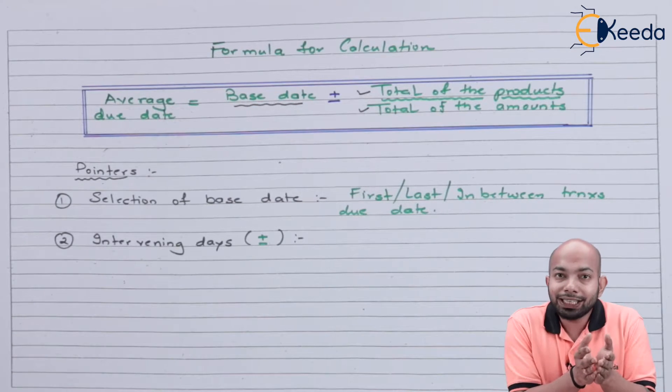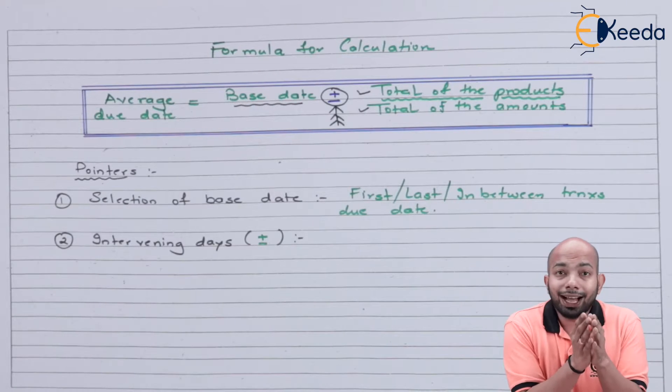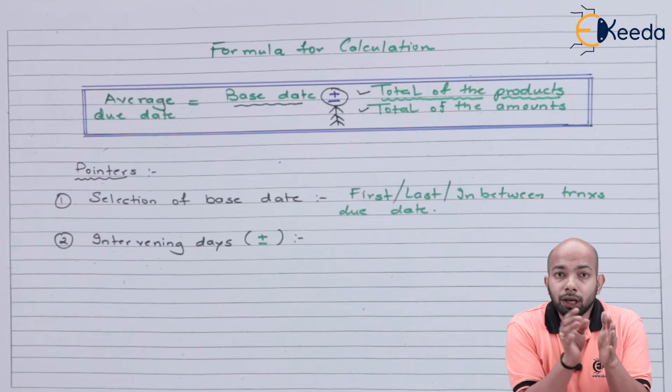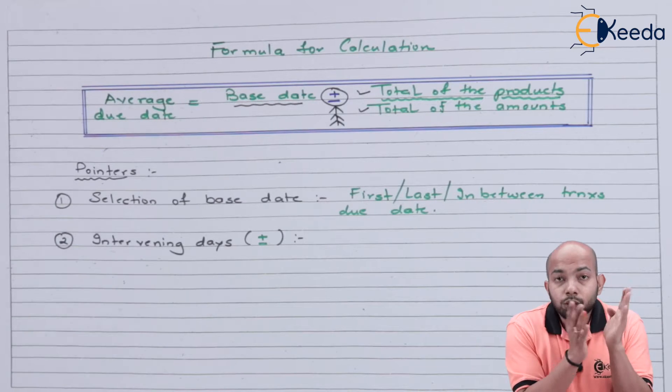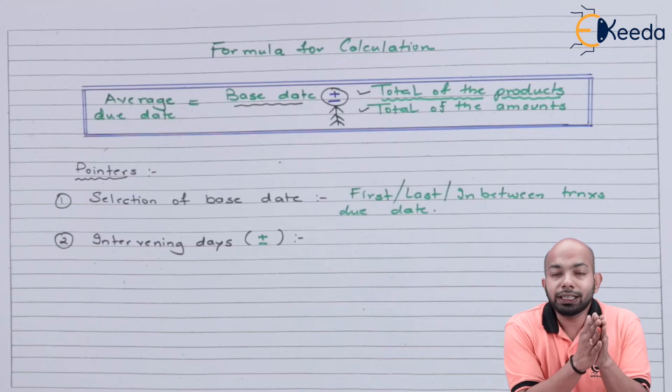The second pointer is intervening days - the plus minus days. Notice the highlight in the formula: plus minus. These intervening days have to be calculated in a specific way.